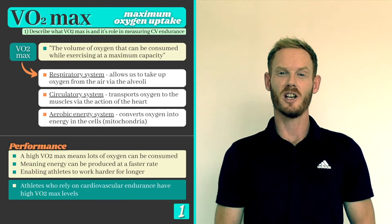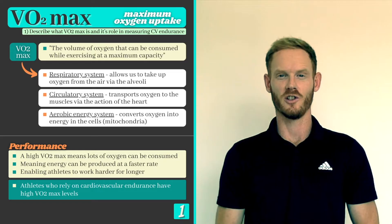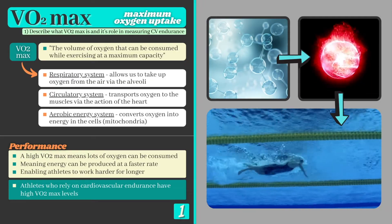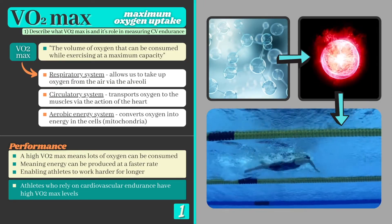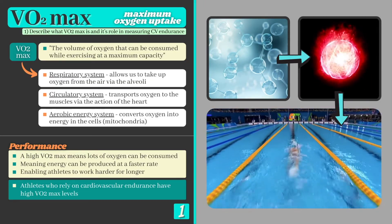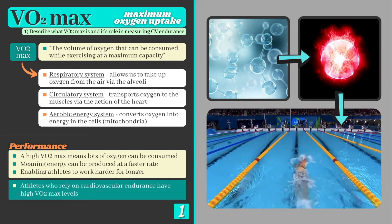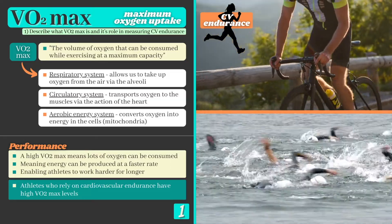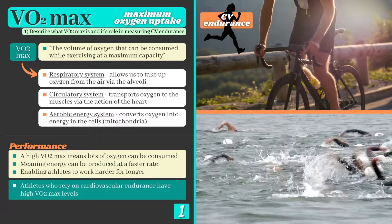Someone with a high VO2 max level is able to consume large quantities of oxygen during exercise. As a result, lots of energy or ATP can be produced, enabling them to work for long periods of time and at higher intensities. This means that VO2 max is an excellent measure of cardiovascular endurance or stamina, and is typically high in endurance athletes such as marathon runners, cyclists, triathletes and games players.